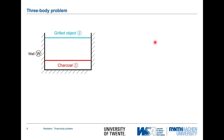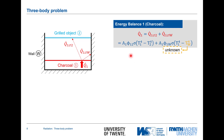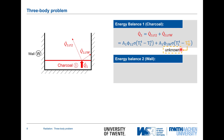Now let's take the wall into consideration: charcoal, grilled object, wall. The first energy balance around the charcoal gives exchange to the grilled object and exchange to the wall, considering the wall as one object. Putting that in, this is the exchange one to two plus view factor terms for the wall with the unknown wall temperature.